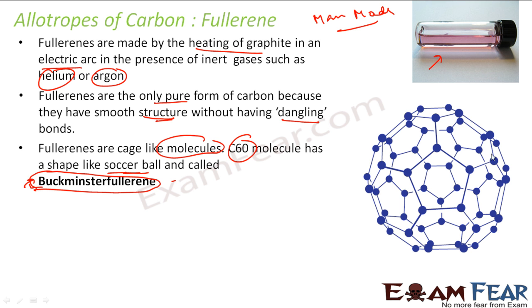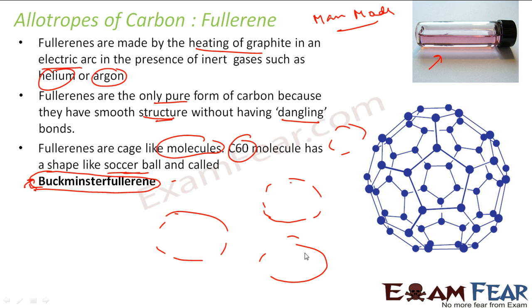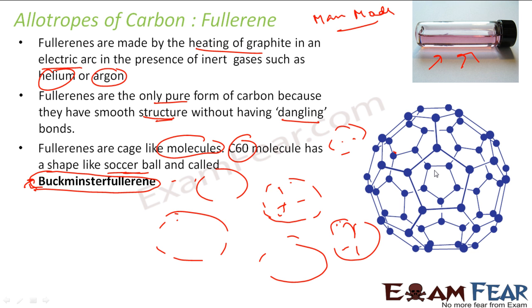Fullerene exists in liquid form because its structure is limited — each fullerene molecule is an independent cage-like structure. Unlike graphite and diamond where bonds extend into a mammoth structure, in fullerene the structure is limited to 60 carbons. The next fullerene molecule is again 60 carbons but independent. So individual molecules can move freely, and it exists in liquid form. In graphite and diamond, the same bond extends throughout, but in fullerene each cage is separate.